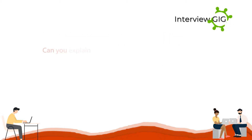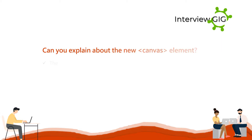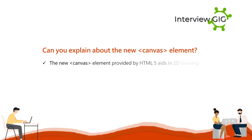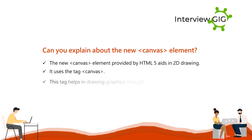Can you explain the new canvas element? The new canvas element provided by HTML5 aids in 2D drawing. It uses the tag canvas, which helps in drawing graphics through scripting, usually JavaScript.